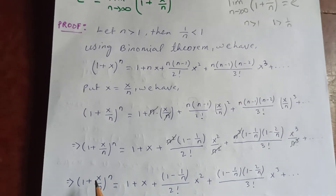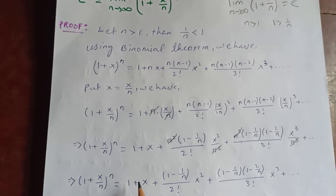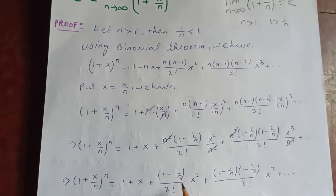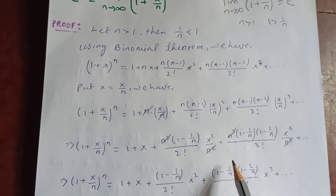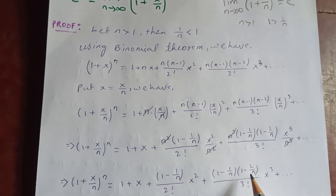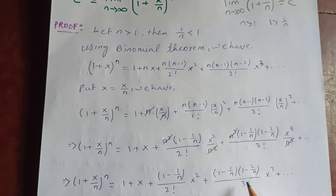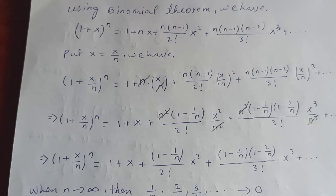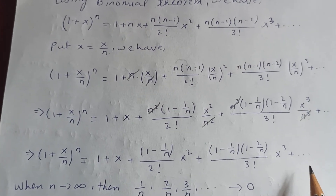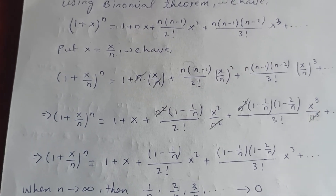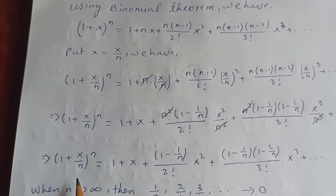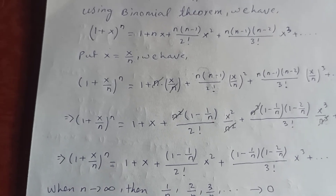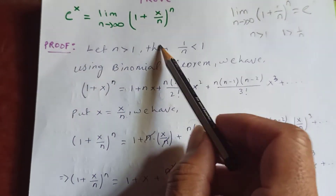So (1 + x/n)^n equals 1 + x + (1 − 1/n)/2! · x² + (1 − 1/n)(1 − 2/n)/3! · x³ plus and so on. We have now obtained this expanded form.